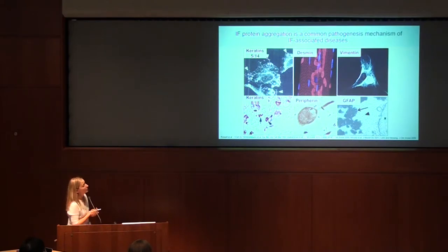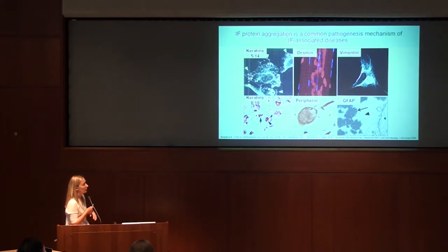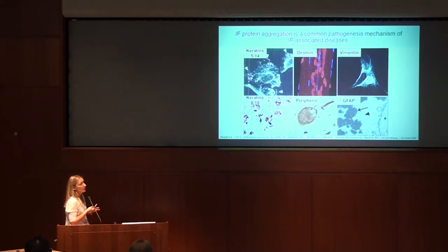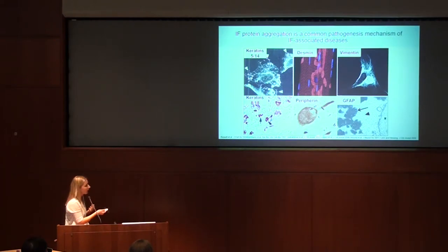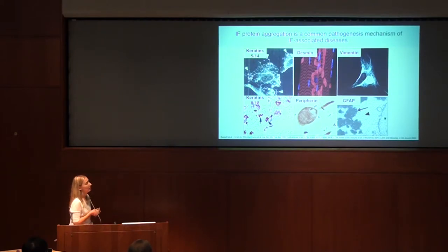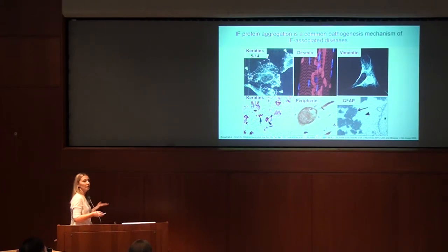When I started my lab three and a half years ago, we wanted to tackle the problem of how these aggregates form, what their significance is, and what we can do to prevent their formation. We had to take a stand on whether we think they're harmful or just a sign of disease. Based on all the evidence accumulated, we think these aggregates are harmful to the cell, primarily because intermediate filaments are very abundant. The only way to really know is to get rid of them and see what happens, or reverse the process and make normal filaments — and we're interested in doing that with small molecule drugs.